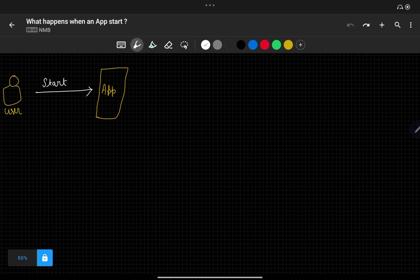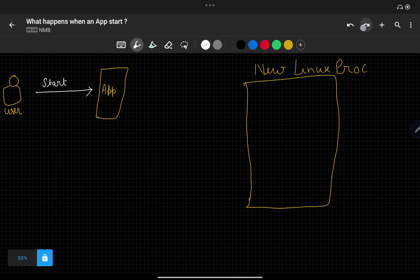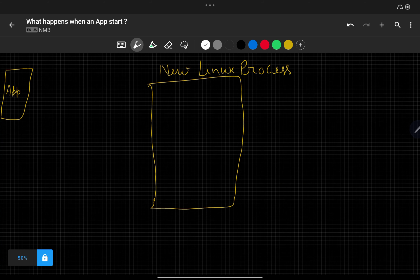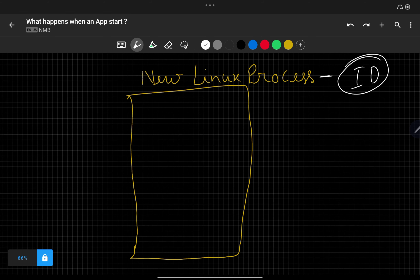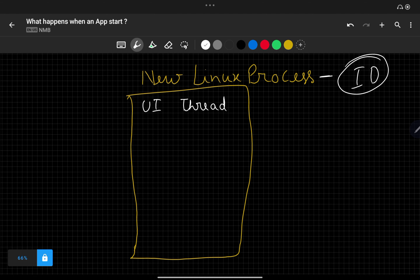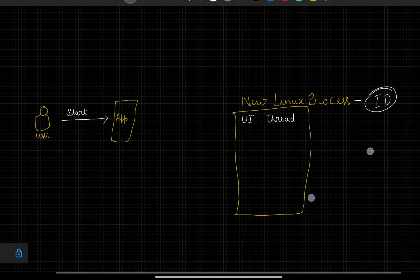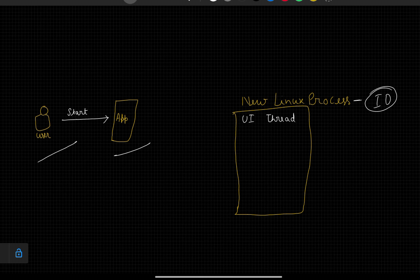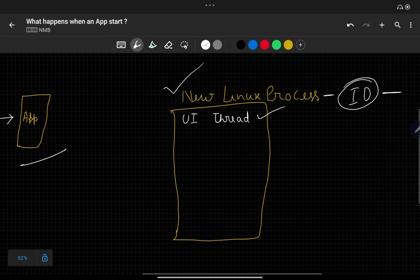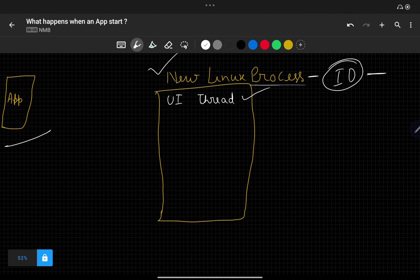The first step: whenever a user starts the application, one new Linux process will be created. This Linux process will have a unique ID. And this Linux process will have one thread — this is called the thread of execution, or our main/UI thread. This is by default created in each Linux process. So whenever a user starts the application, we get one Linux process with a unique ID, and that process has the main UI thread by default.